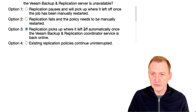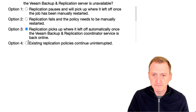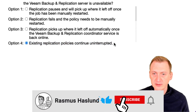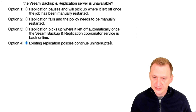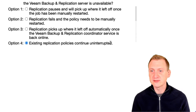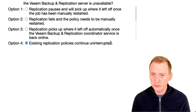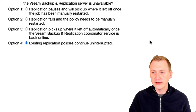Option three: replication picks up where it left off automatically once the backup replication coordinator service is back online. No — nothing is impacted because we don't actually need the backup replication server to be running. And option four: existing replication policies continue uninterrupted. Yes, 'existing' is the keyword here. What's already been configured as a policy is pushed out to the CDP proxies and they will continue working. You can't make any changes — you can't add or remove anything — until the backup and replication server is up and running again.